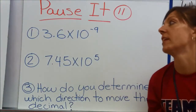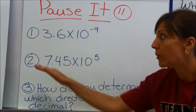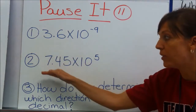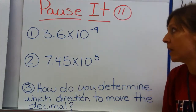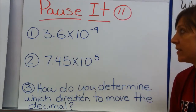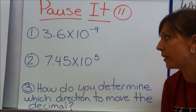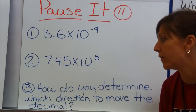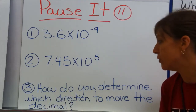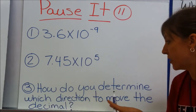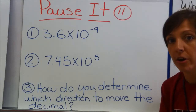This is your pause-it section. I want you to pause the video and answer number 1, 2, and 3. Number 1: 3 and 6 tenths times 10 to the negative ninth. Number 2: 7 and 45 hundredths times 10 to the fifth. And number 3: how do you determine which direction to move the decimal? Go ahead and pause.